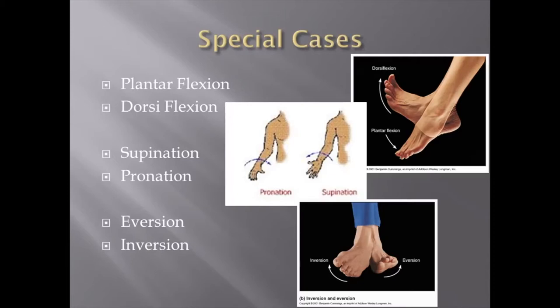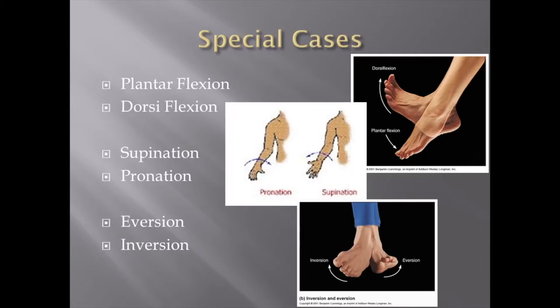Supination and pronation confused a lot of people in class. Pronation means your hands are facing down — in anatomical position, your thumbs have turned toward your body. Supination is turning outward. A good way to remember supination: when your hand is turned outward, you're holding a bowl of soup. That's how to memorize it — it seems to work.